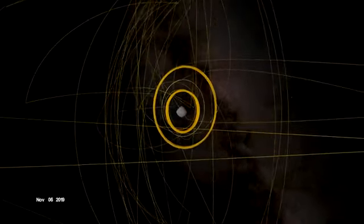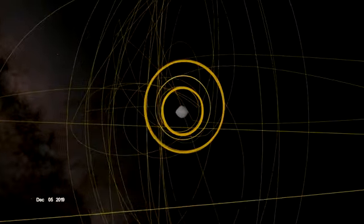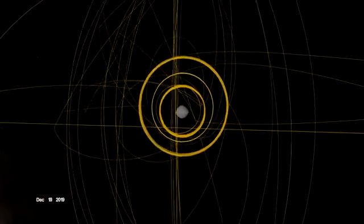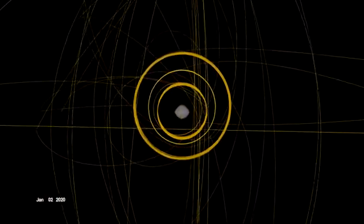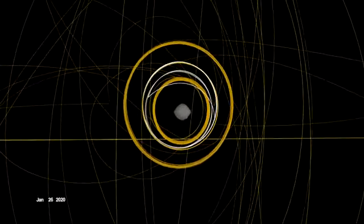OSIRIS-REx concluded its first year at Bennu back in orbit, circling the asteroid's terminator, or boundary between day and night. Here, outside forces acting on the spacecraft are balanced, allowing it to orbit within the same plane over time.